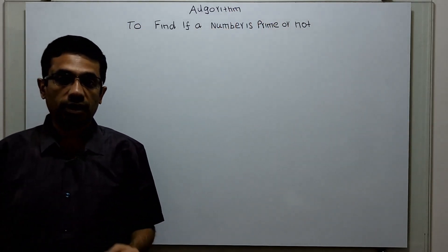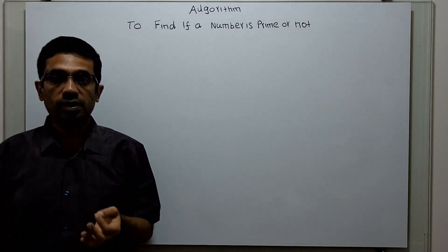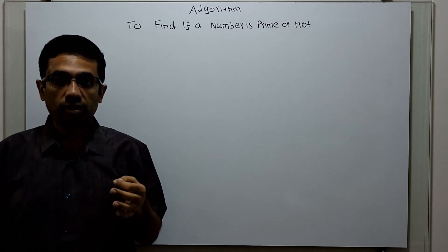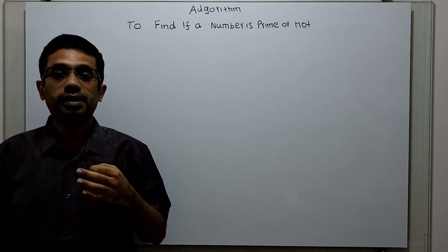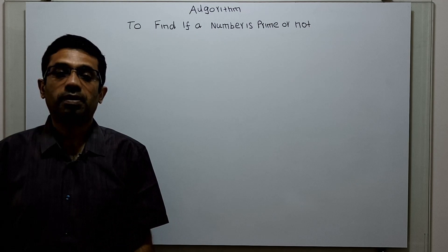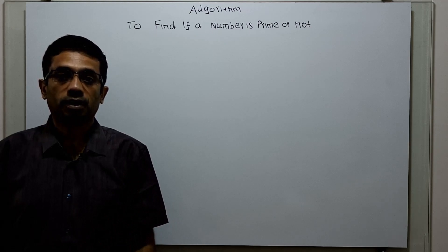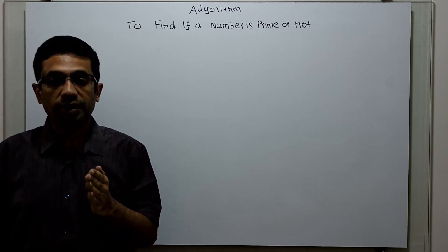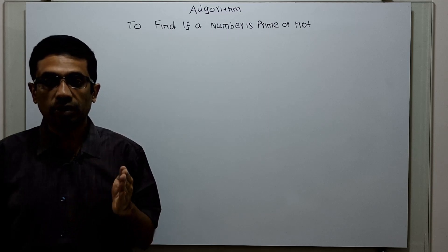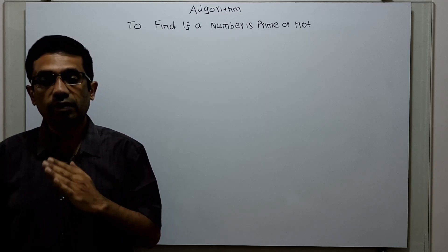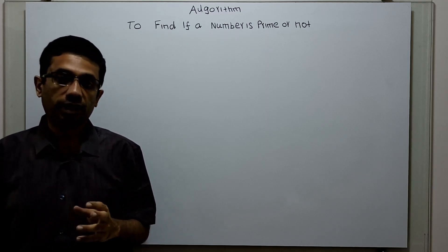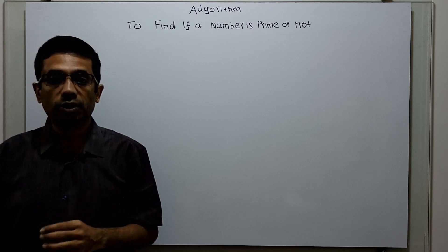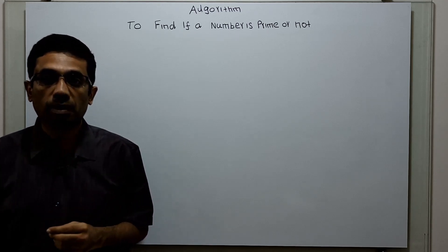What is a prime number? A number which is fully divided by 1 and itself is known as a prime number. That means the remainder, when you divide the number by itself and 1, will be 0. For remaining values, the remainder is not 0; such a number is a prime number.